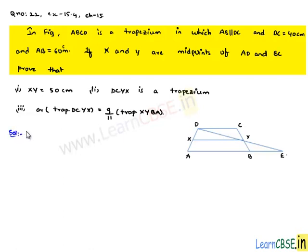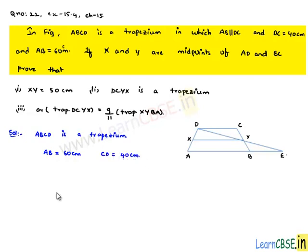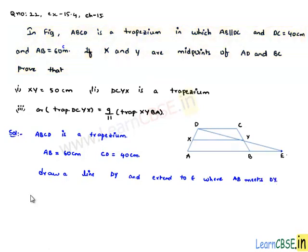Moving on to the solution, let us note the given information: ABCD is a trapezium, X and Y are midpoints of AD and BC respectively, AB is equal to 60 cm and CD is equal to 40 cm. To prove the first result, let us draw trapezium ABCD with midpoints X and Y on AD and BC respectively. Join XY and draw a line through D and Y, extending it to point E where it meets the extension of AB.